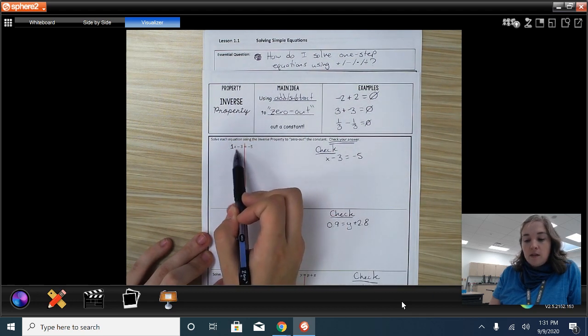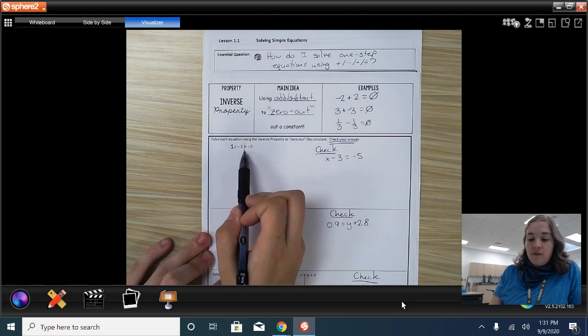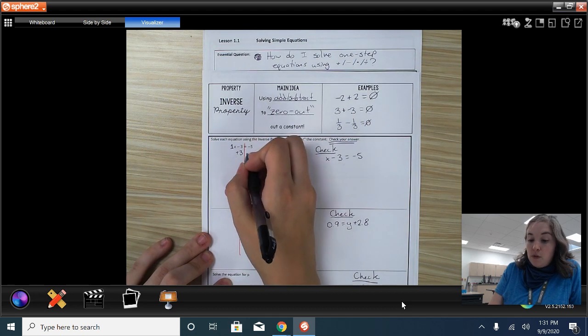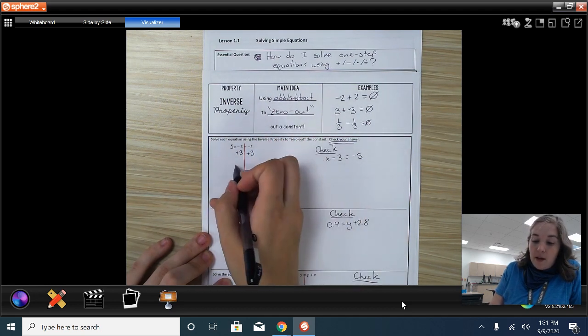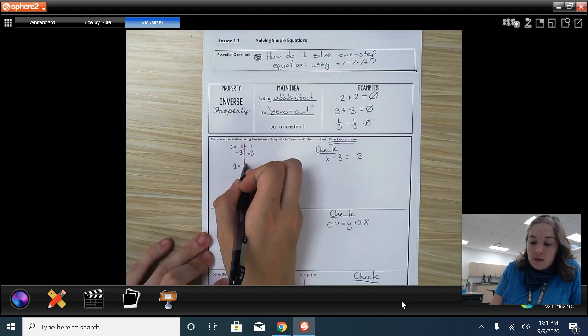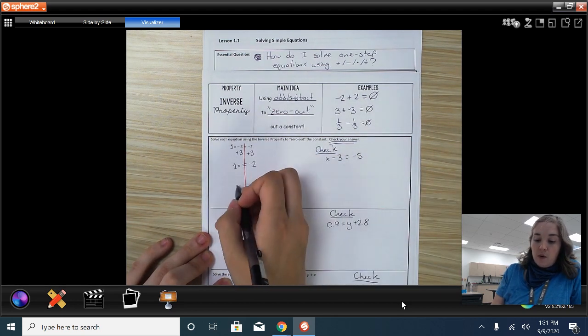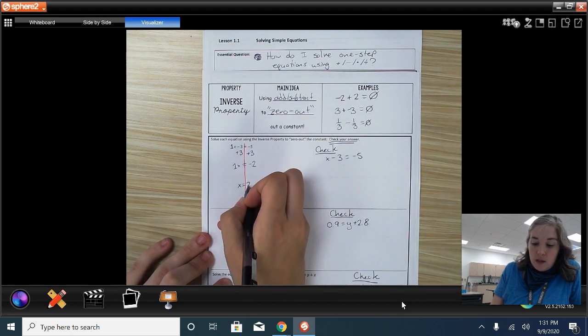I need to zero out this negative 3. Well, the opposite of negative 3 is plus 3. Whatever I do to one side, I have to do to the other. So then I am left with 1x is equal to negative 2. So that means I know that x equals negative 2. That is my answer.